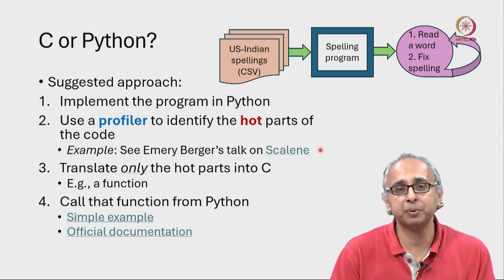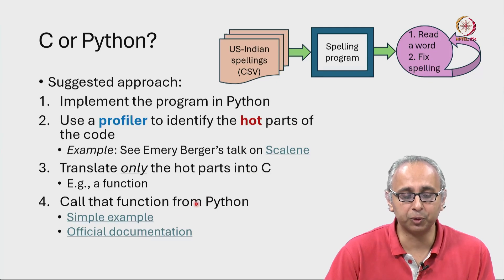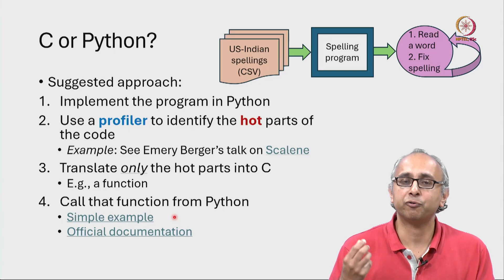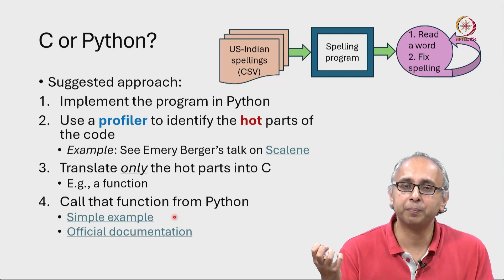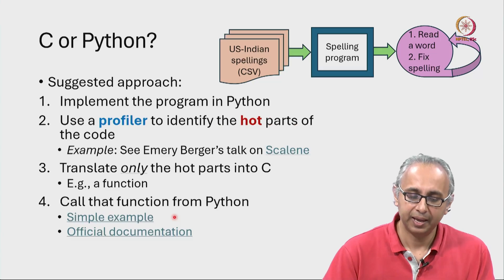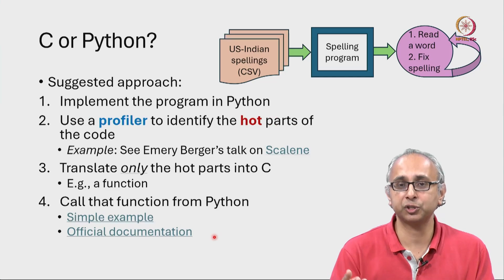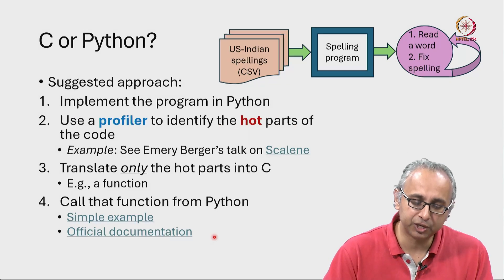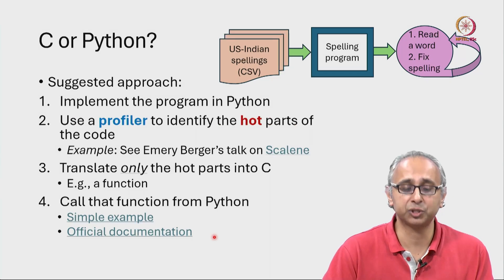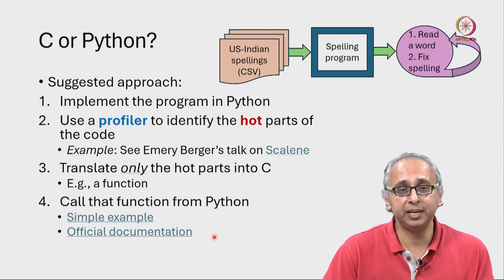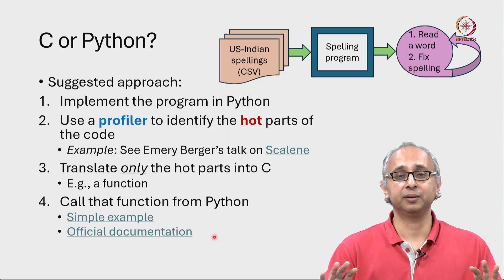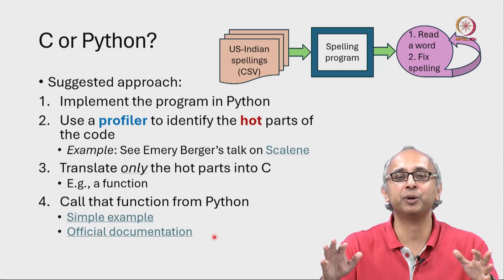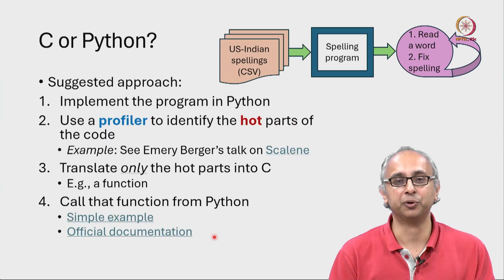I am sharing a couple of links: one is a blog post giving a very simple example of how you can call C code from Python code, and the second is the official documentation which gives more advanced tricks. The official documentation is much harder to read, which is why I'm giving you the simple example first. I am leaving this task incomplete here — my idea is to give you pathways to explore further on your own.